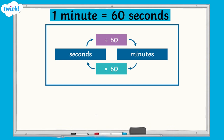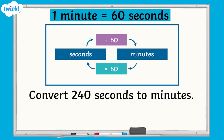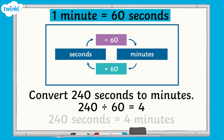To convert from seconds to minutes, we would divide the number of seconds by 60 to give us the total in minutes. For example, to convert 240 seconds to minutes, we would divide 240 by 60, which equals 4. 240 seconds equals 4 minutes.